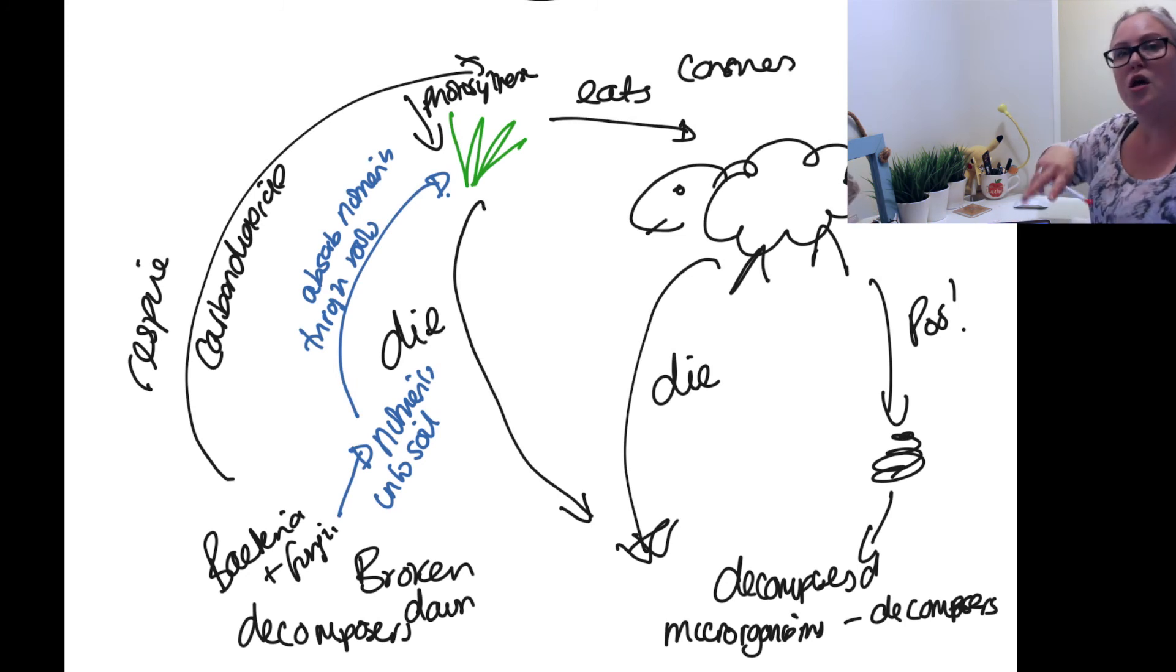So those building blocks that have been taken in by the plant get transferred across to the animal, to the sheep in this example, but then they get cycled all the way back round so that they're available for other organisms.